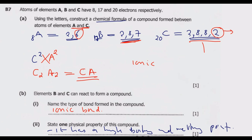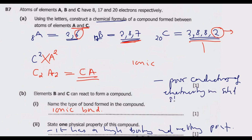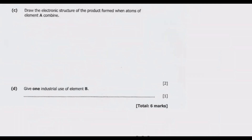In terms of other properties of ionic compounds you can mention: one, they are poor conductors of electricity in the solid state; two, they only conduct electricity when they are in a molten state; and three, they exist as solids at low temperatures.